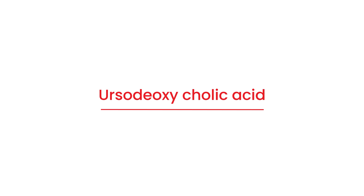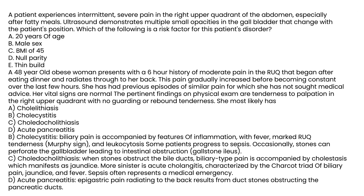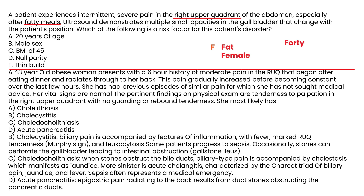Clinical vignette 1: A patient experiences intermittent severe pain in the right upper quadrant, especially after fatty meals. Ultrasound shows multiple small opacities in the gallbladder that change with position. Which of the following is a risk factor? Using the 5 F's — fat, female, 40, fertile, flatulent — the answer is BMI of 45, which represents the 'fat' risk factor. Age 20 is under 40, male sex is not female, nulliparity is the opposite of fertile, and thin build is opposite of overweight.